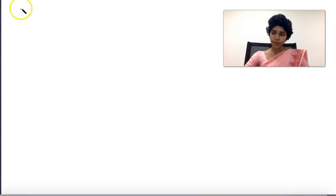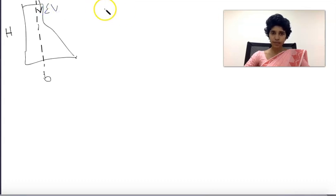Suppose the dam has a given height H and base width b. This is the central axis, with vertical forces and horizontal forces acting on it.